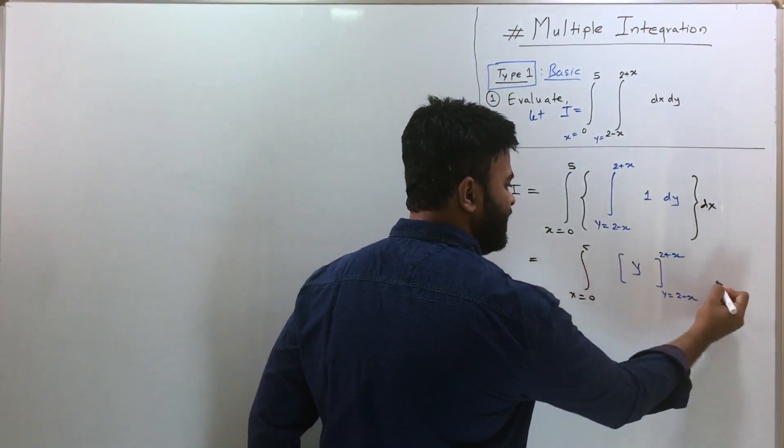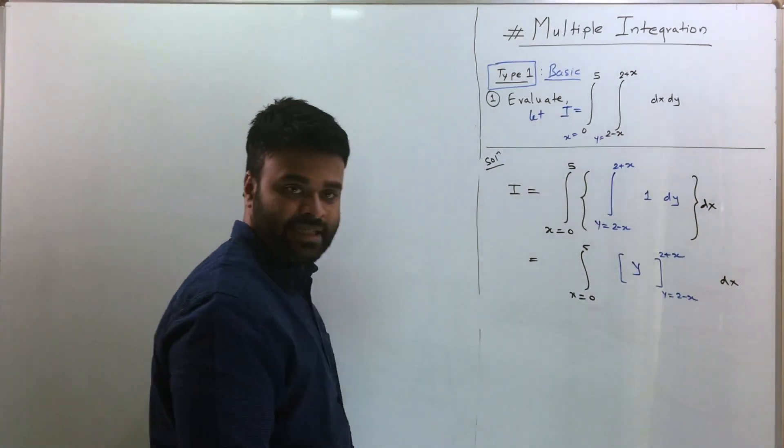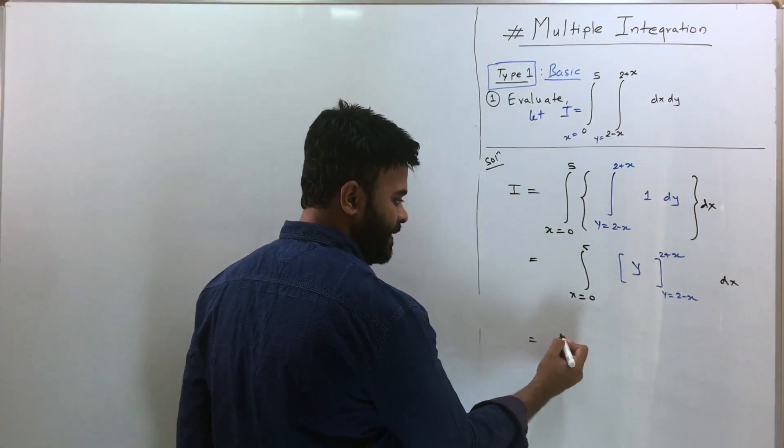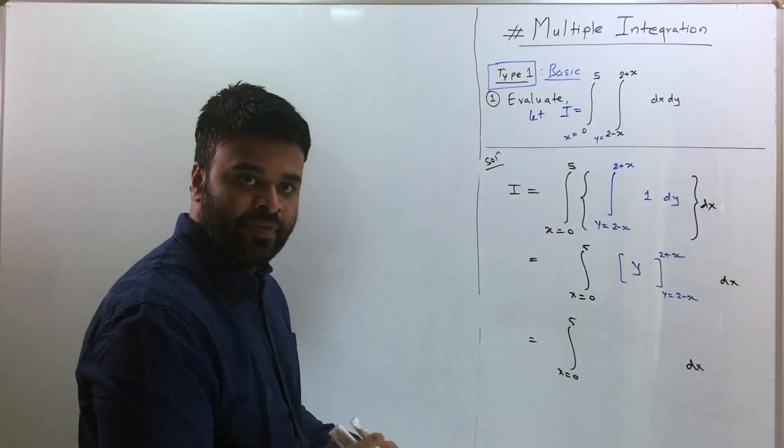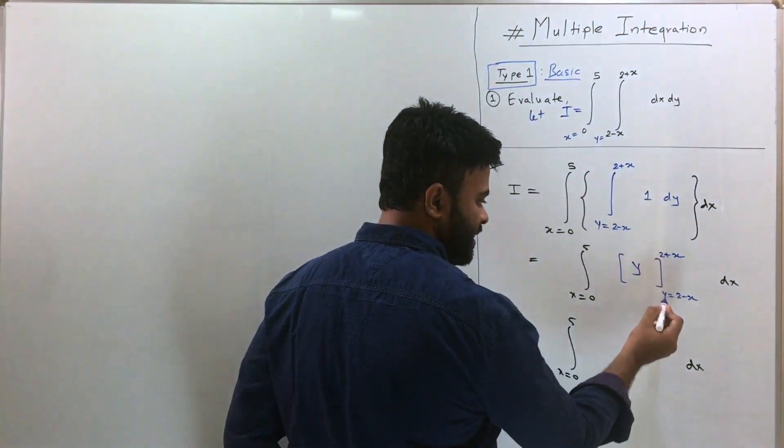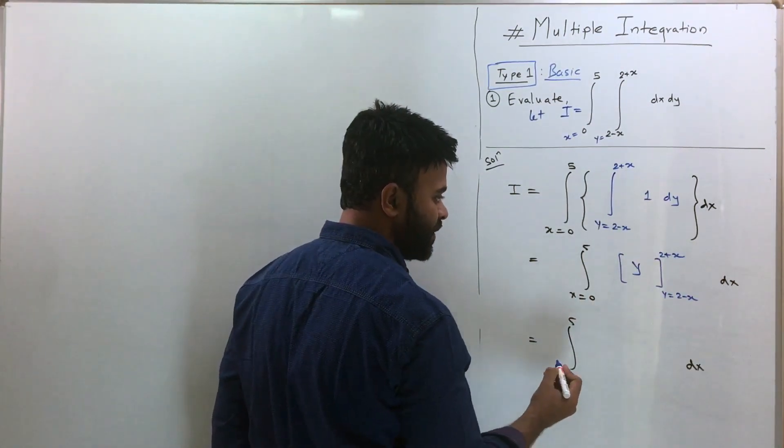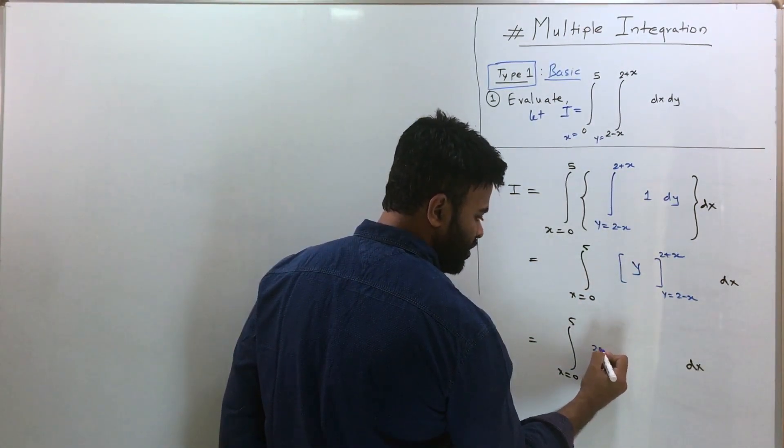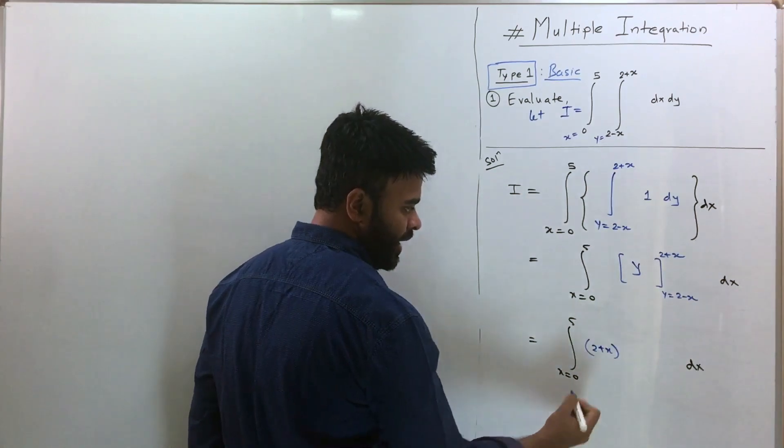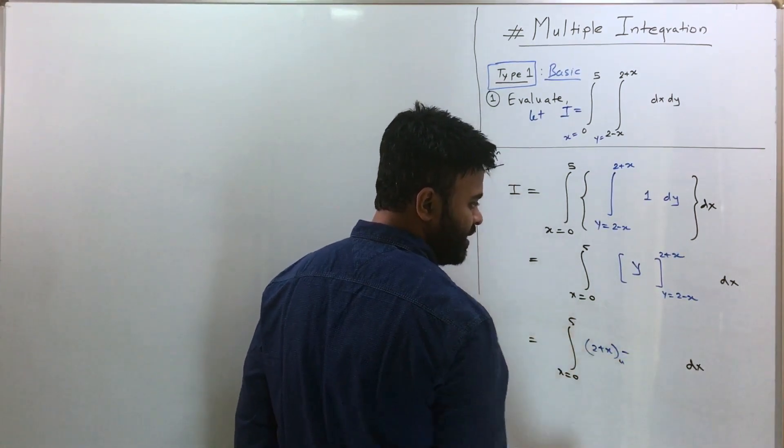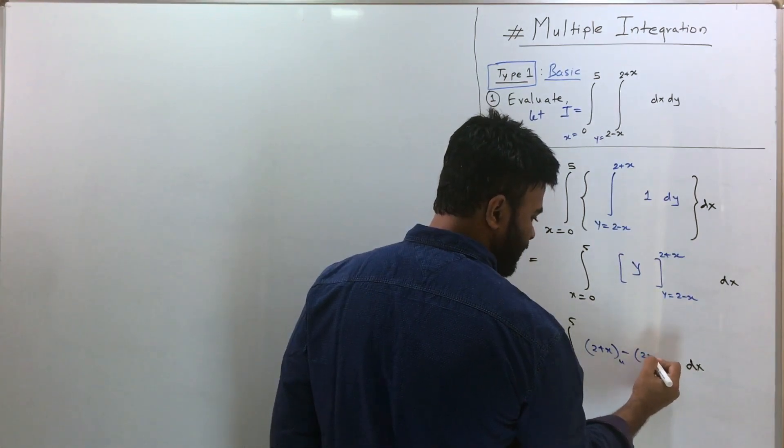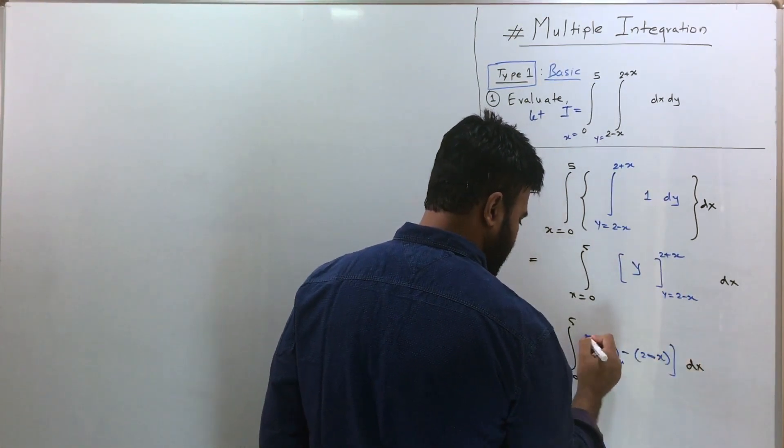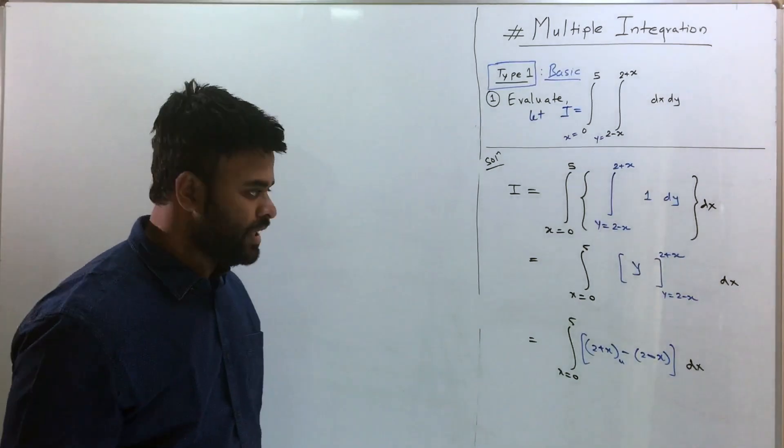Now the next step: integration X equal to 0 to 5 dx remains as it is. Now you put the upper limit and the lower limit to evaluate this one. When I put the upper limit, it is going to be 2 plus X minus the lower limit which is 2 minus X.